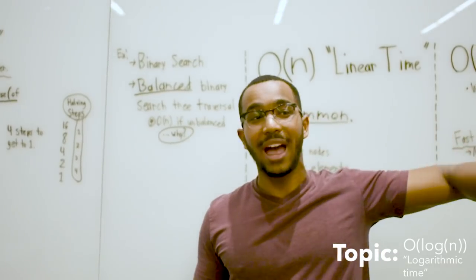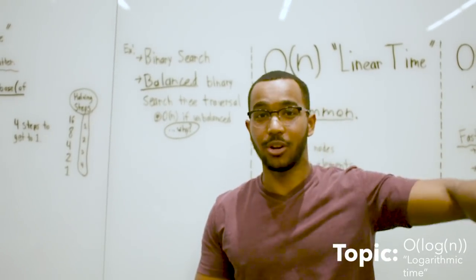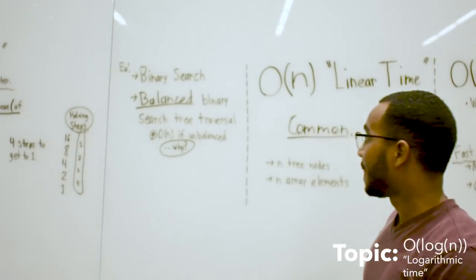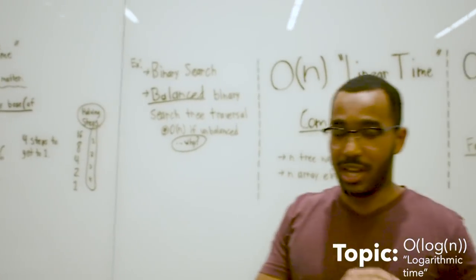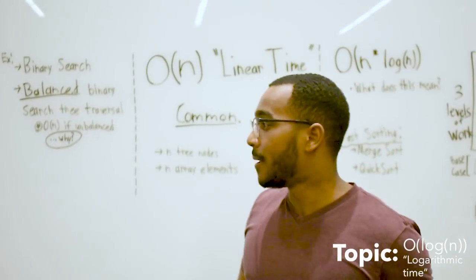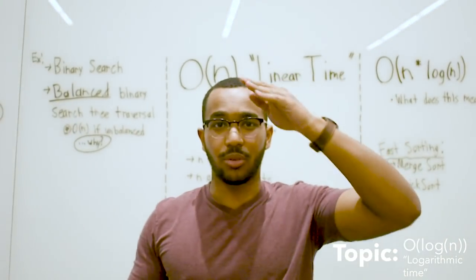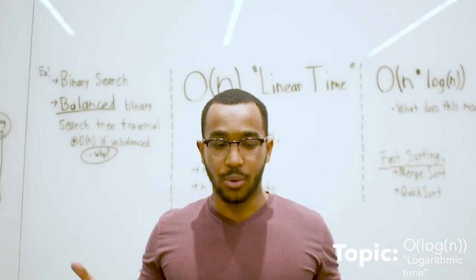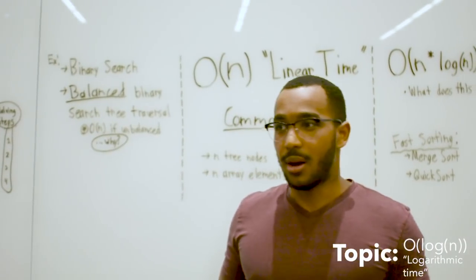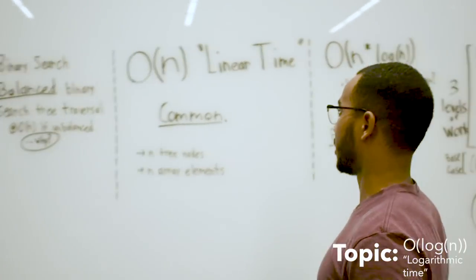If we have a binary search tree that's balanced, every time we go down a level, we're cutting off a whole half subtree. We're literally halving our search space every single time. This is only if the tree is balanced. If the tree is unbalanced, if it's skewed to the right or left, you're going to be touching all of the nodes.